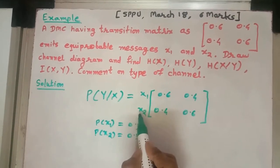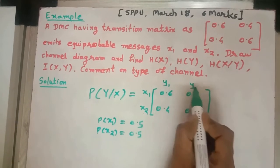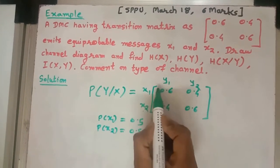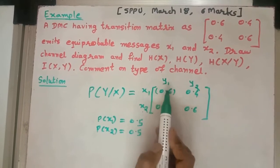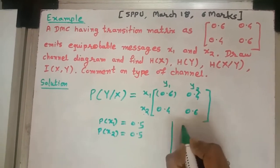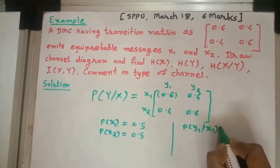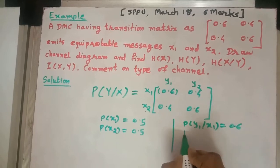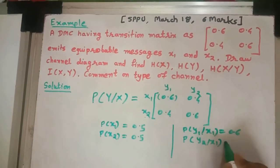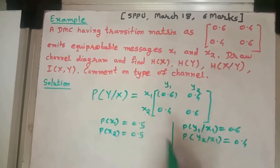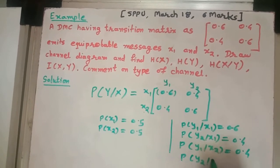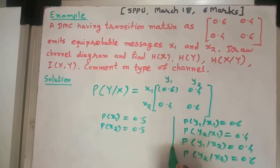These two equiprobable messages are transmitted and we receive y1 and y2. From the transition matrix: probability of receiving y1 when x1 is transmitted is 0.6, probability of receiving y2 when x1 is transmitted is 0.4, and probability of receiving y2 when x2 is transmitted is 0.6.